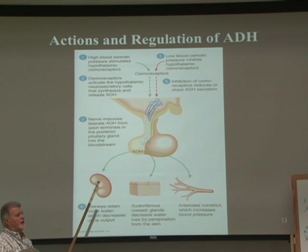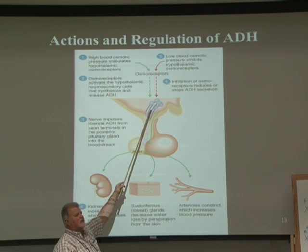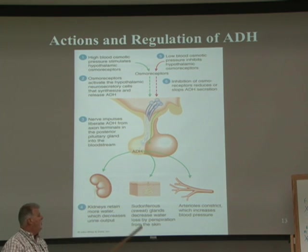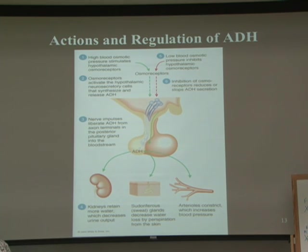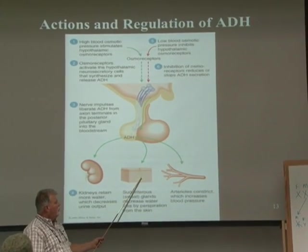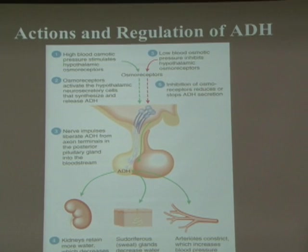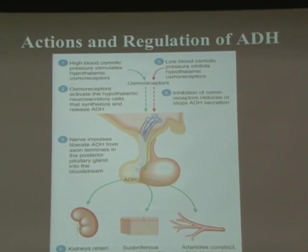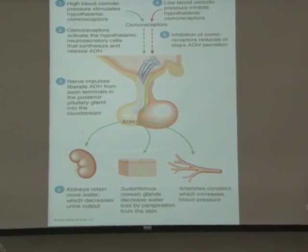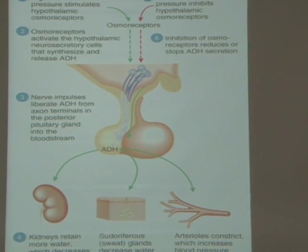When blood osmolarity is high because we're dehydrated, we want to pee less. Neurosecretory cells increase ADH production; ADH is released from the posterior pituitary, causing the kidney's principal cells to produce aquaporin-2, reabsorbing water. ADH also decreases sweat production and causes vasoconstriction to maintain core circulation, decreasing blood flow to extremities — which in winter can make extreme athletes more susceptible to frostbite.